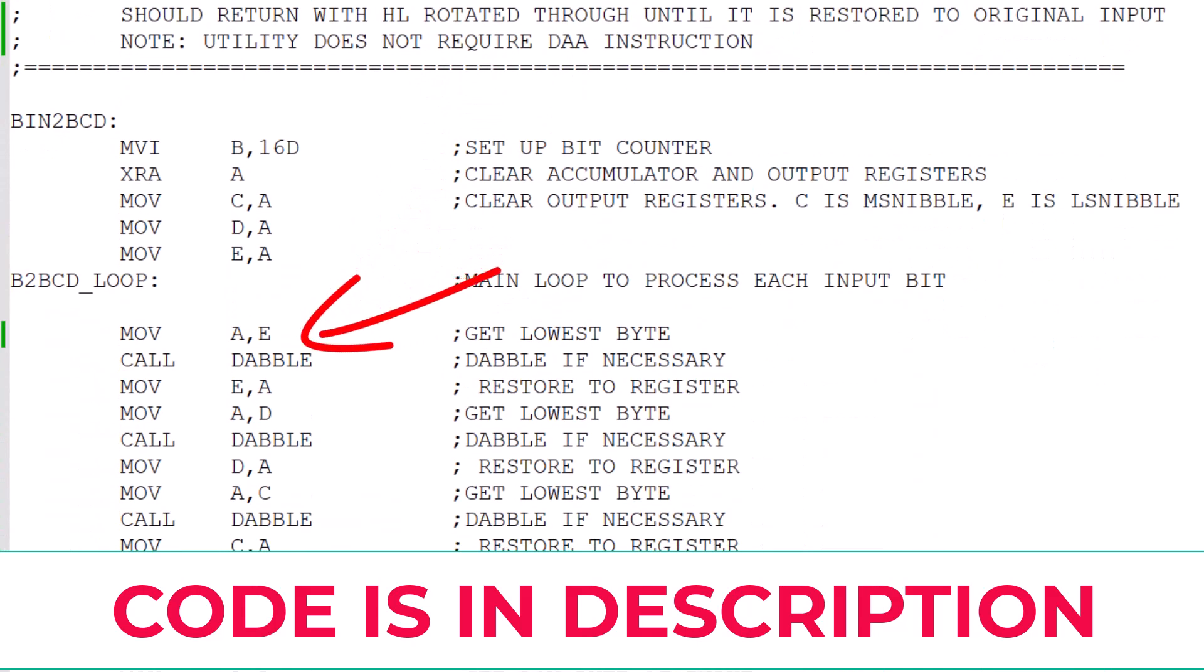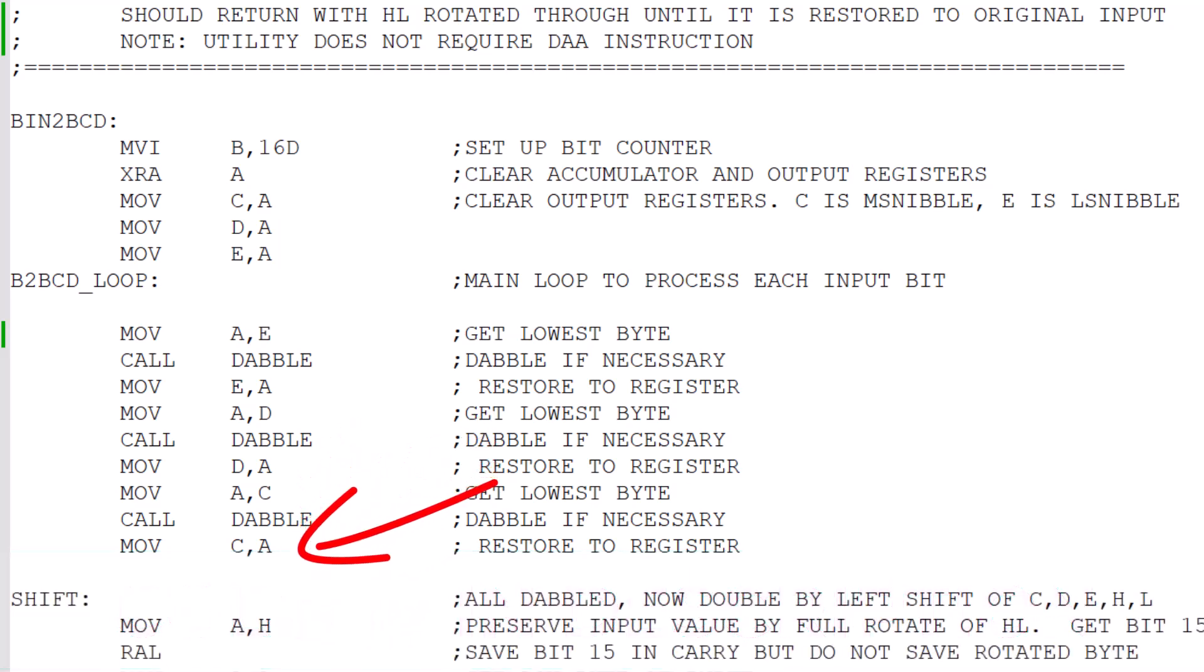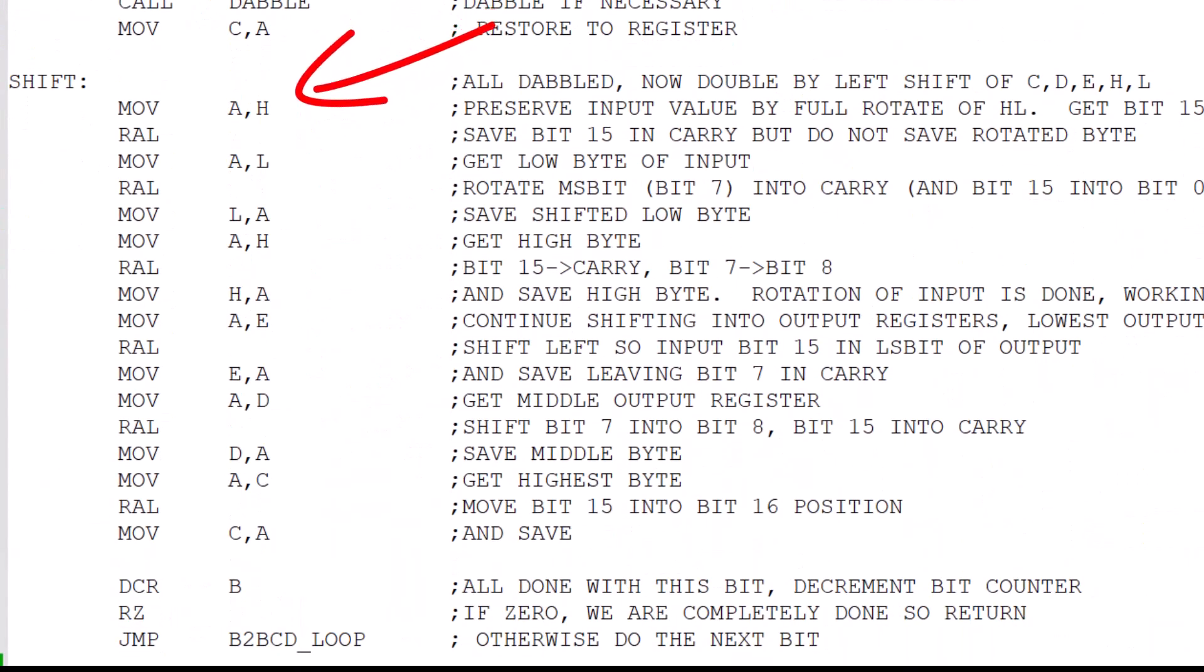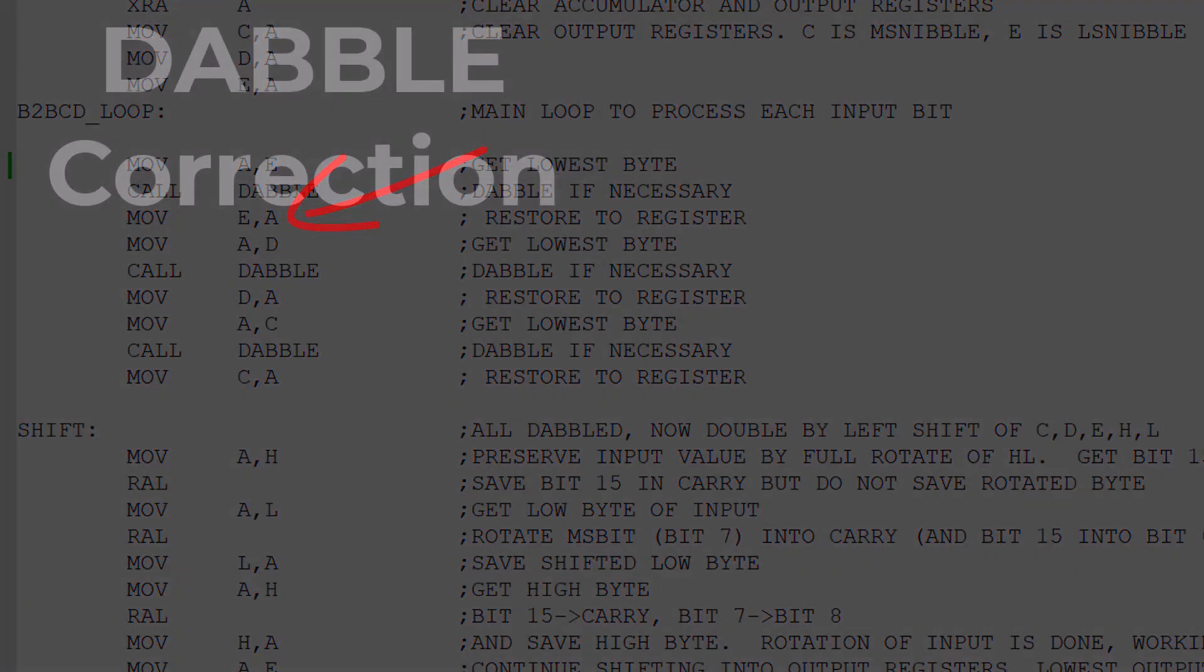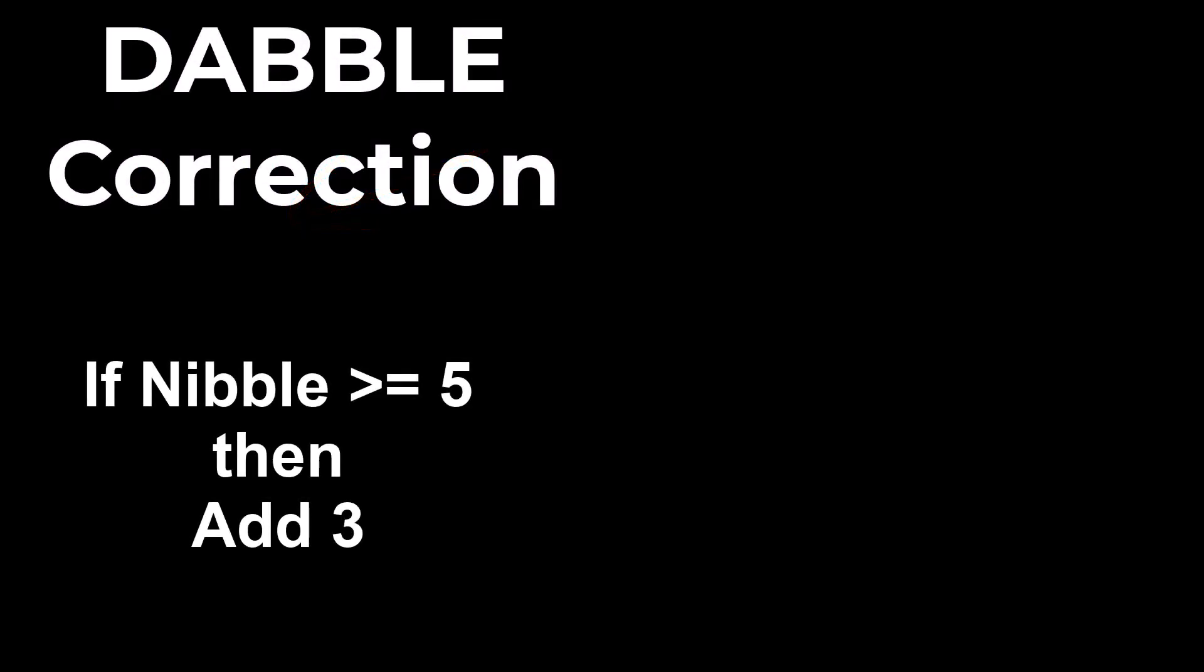For the main loop, the program is going to go through and dabble all of the output nibbles and then come back and do a full left shift of the 40-bit register comprising C, D, E, H, and L. For each of the three output bytes, the dabble puts the byte into the accumulator and then calls a dabble subroutine, and then it puts the dabble byte back into its register. If we look at the dabble routine, it looks at each nibble, and if it's five or greater, then it adds three.